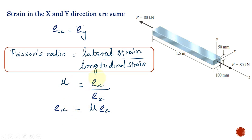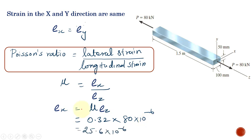Using Poisson's ratio, we calculate the lateral strain ε_x. Poisson's ratio is 0.32 and the longitudinal strain ε_z is 80 × 10⁻⁶. Therefore, ε_x = 0.32 × 80 × 10⁻⁶ = 25.6 × 10⁻⁶. This is the lateral strain. Since ε_x equals ε_y, we now have the strain along both the X and Y axes.